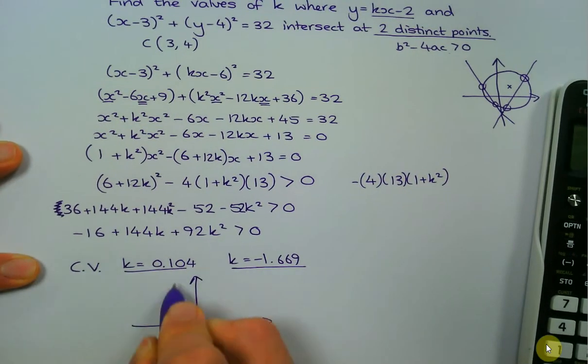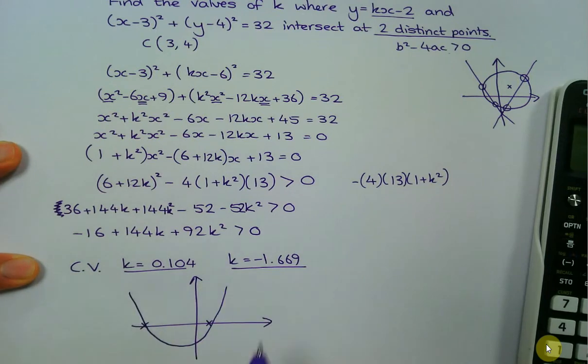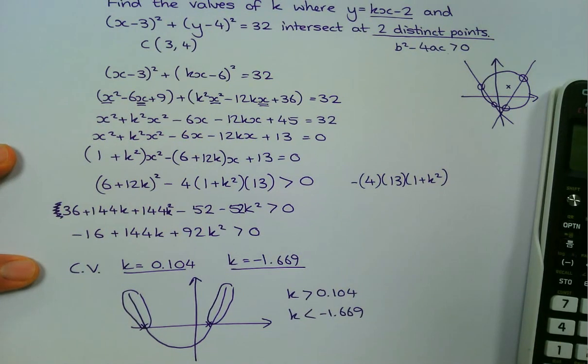Okay, so critical values done. I've got to make a sketch. Let's pop that one there and there. It's a happy quadratic, so we can just make a sketch. Where is this function greater than the line zero? So it's all of this bit here, all of this bit here. So when k is greater than 0.104 and when k is less than -1.669. Okay, so hopefully that makes sense to you all, and best of luck trying questions like this.